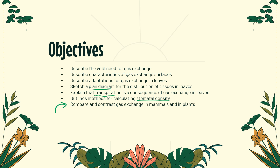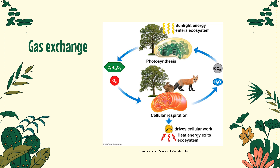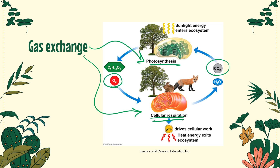Gas exchange in unicellular organisms like chlorella algae cells is generally pretty easy — gases can just diffuse in and out of each individual cell. In multicellular organisms there are some challenges; we have to work pretty hard to manage gas exchange for all of the cells in our bodies. Gas exchange is incredibly important to living things due to the need to carry out energy conversion processes. Animals and plants carry out both respiration and photosynthesis — oxygen is needed for respiration, carbon dioxide is needed for photosynthesis.